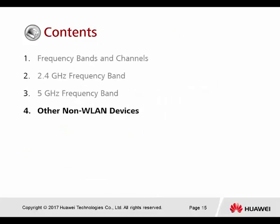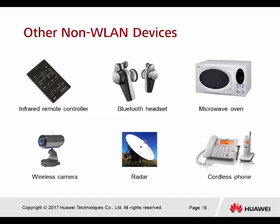Other non-WLAN devices can also block the same frequency band and interfere with wireless signals. Examples include infrared remote controllers, which broadcast signals within the 2.4 GHz band. Bluetooth headsets also operate in 2.4 GHz. Microwave ovens are another item that causes a lot of interference — try to avoid placing APs nearby. Other devices include wireless cameras, radar, and cordless phones.